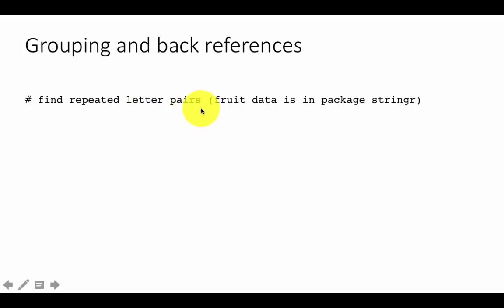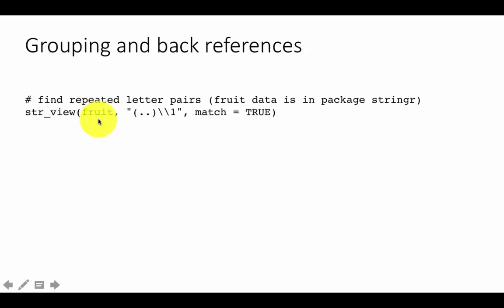Suppose we want to find repeated letter pairs. We'll be using the data called 'fruit', which is also available in the stringr R package — just names of many fruits. So here what we want to do is to find letter pairs that are repeated, like 'an', 'an' — the pair 'an' is repeated, like in banana. So we are saying str_view(fruit), and then within parentheses we are saying dot, dot — any two letters. I'm using dot here to match a letter; in reality, dot would match any character. So I'm just saying any two characters which are repeated. This will match any two characters that are repeated. We put it within parentheses, which means we grouped it.